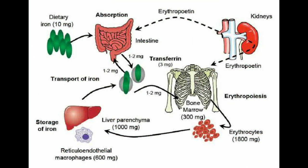When iron is absorbed from the small intestine, it immediately combines with beta-globulin and apotransferrin to form transferrin. This process occurs in the blood plasma. The iron is loosely bound to transferrin and can be released to any tissue at any time. Excess iron is deposited mainly in liver hepatocytes and in small amounts in reticuloendothelial cells of the bone marrow. This stored iron is called ferritin.